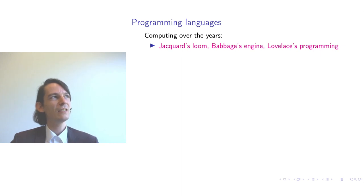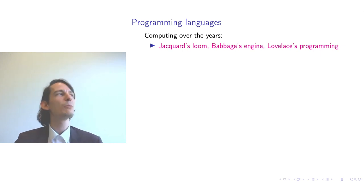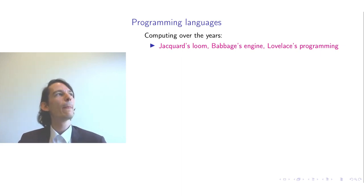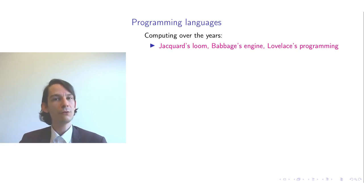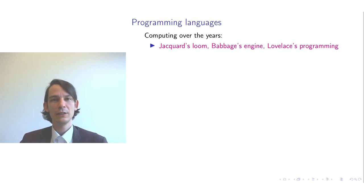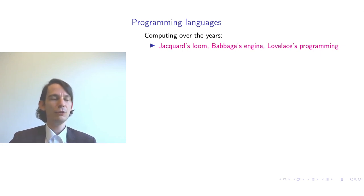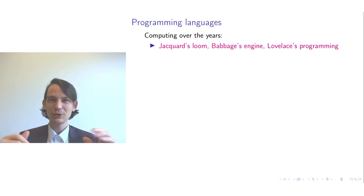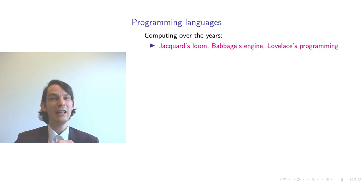Later, Charles Babbage came, and some people say Charles Babbage is the father of computer science. He invented first the difference engine, and later he worked on the analytical engine. You could say that Charles Babbage is a typical computer scientist — he proposes a large project, then works tirelessly on it, and eventually fails.